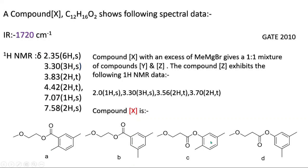Options A and C have the same type of substituted benzene ring. We can eliminate options A and C based on the δ 2.35 6H singlet, because these molecules have no plane of symmetry. Now if you see options B and D, there is a plane of symmetry present. If you pass an axis through the molecule and cut it, you get two equal halves — right side and left side. So this molecule is symmetrical and will give a 6H singlet.